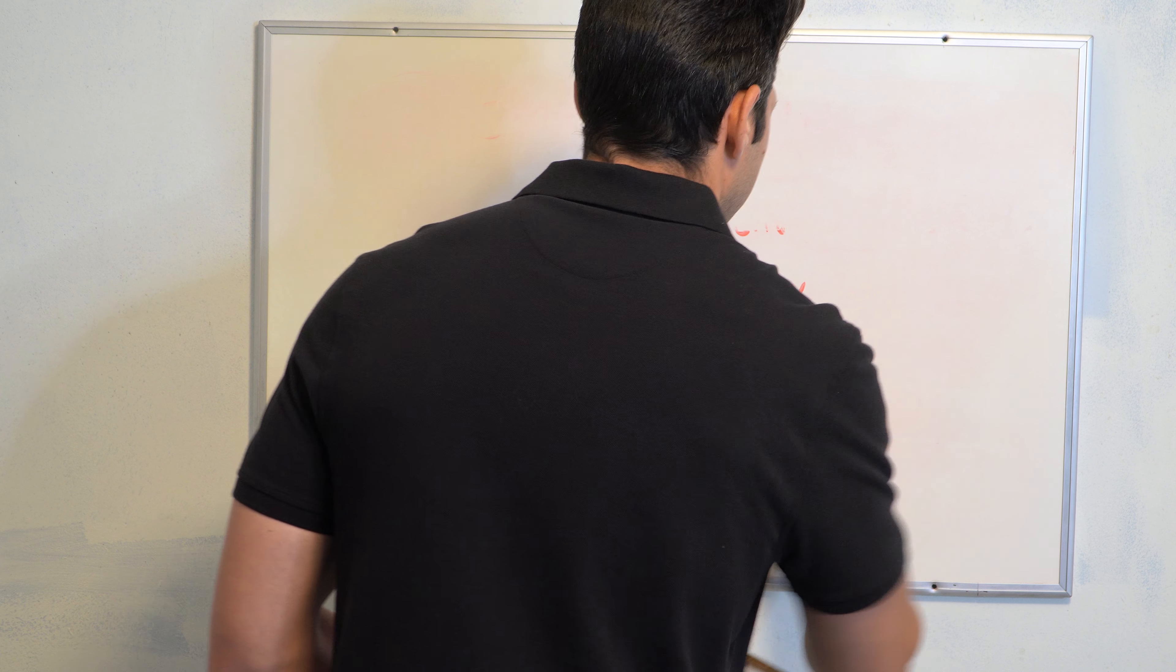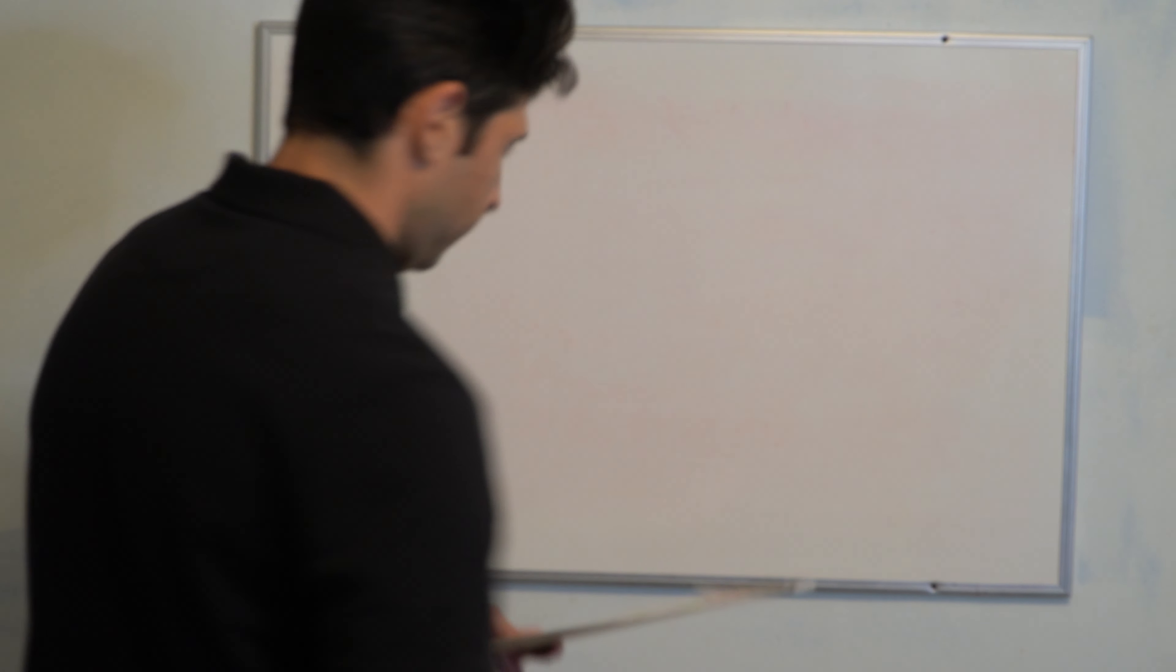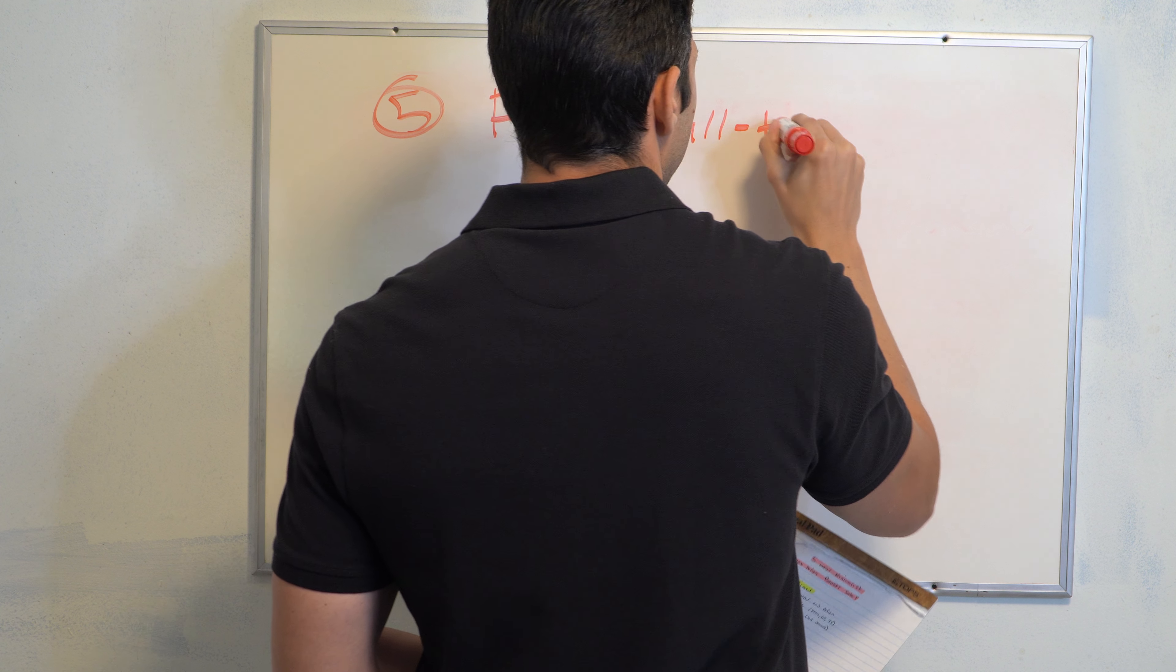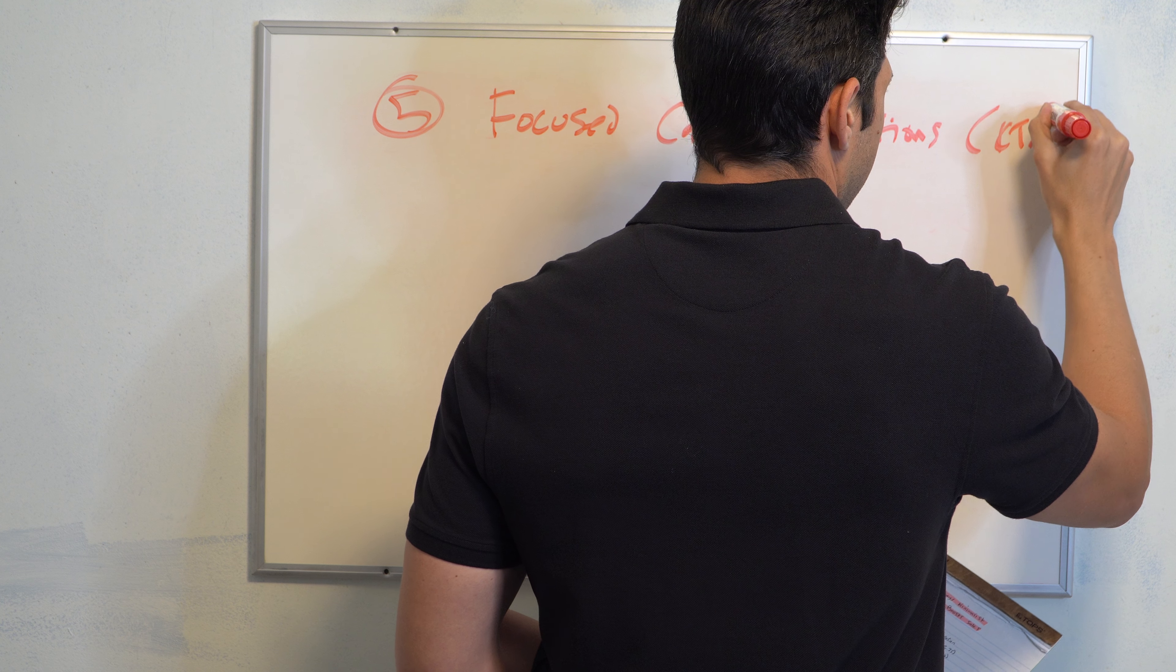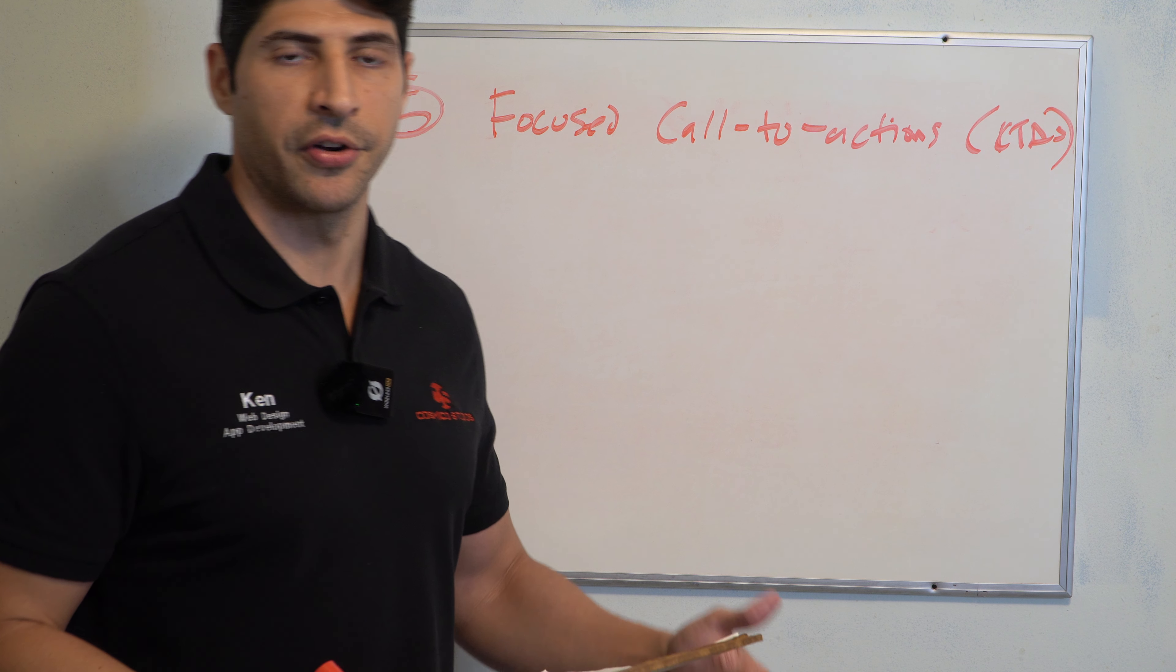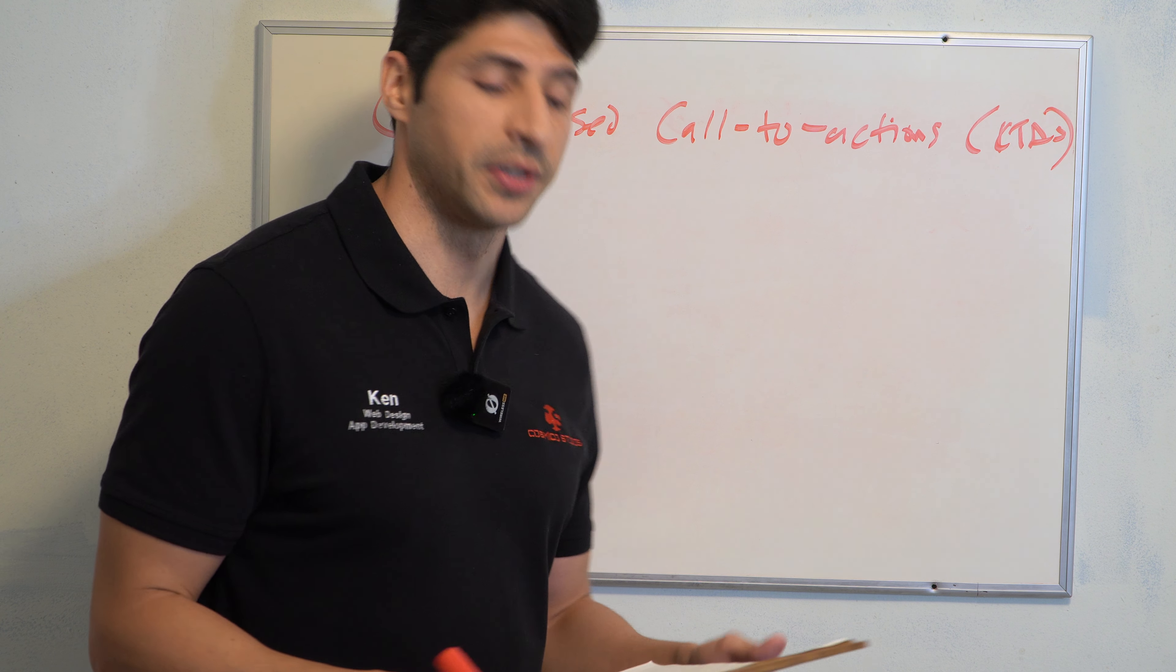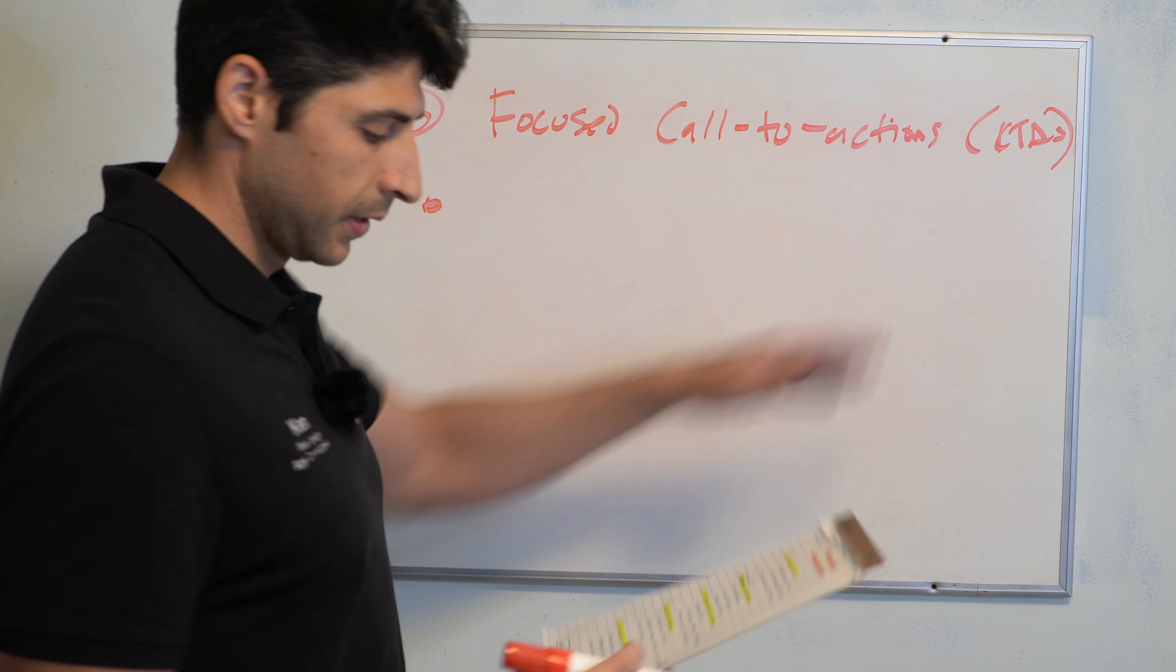Okay, and lastly, number five would be probably the most important I would say is focused call to actions or CTAs. So CTAs are essentially the action of the user you want them to take, whether it is to purchase or to learn more or to subscribe or to do a free trial, the ultimate action you want them to take. Applying minimalism and simplicity to the website also applies to the CTAs. And what does that mean?